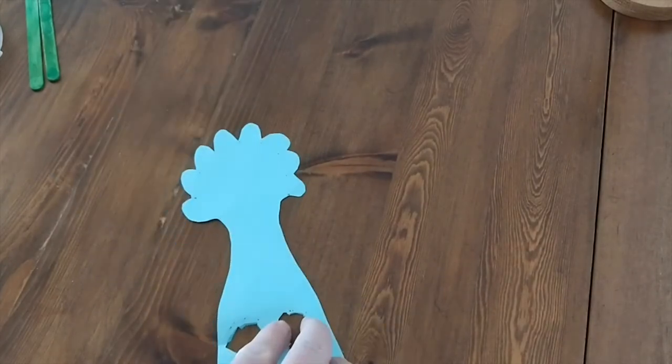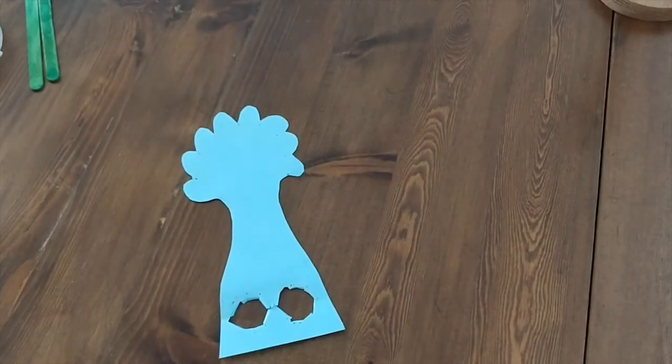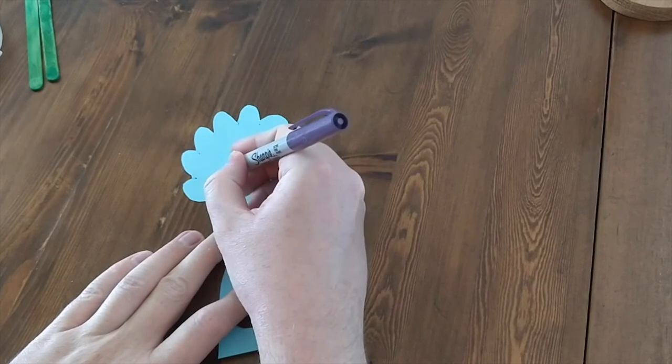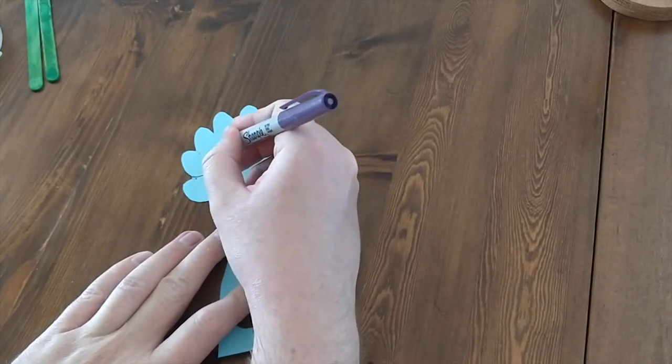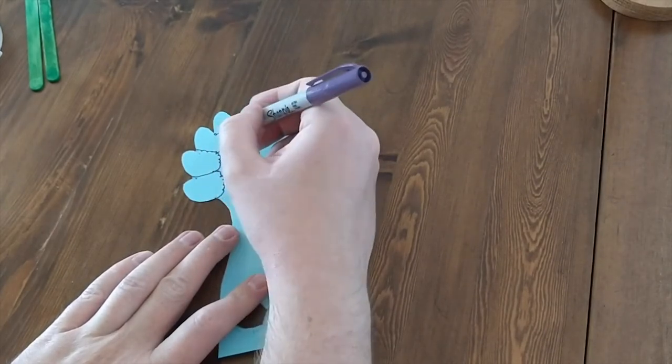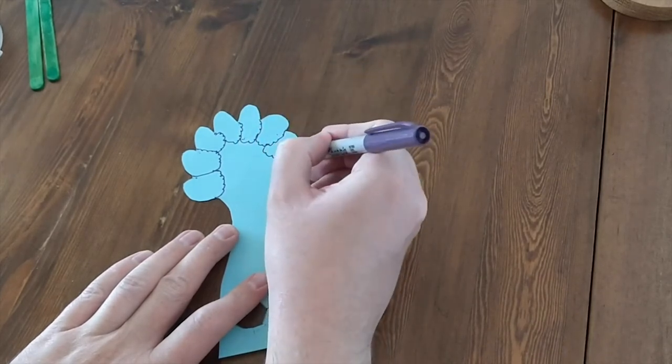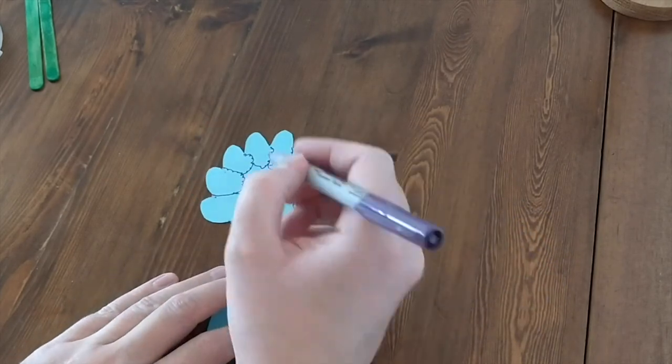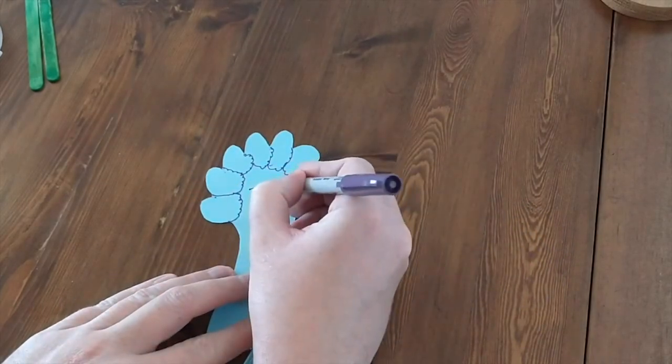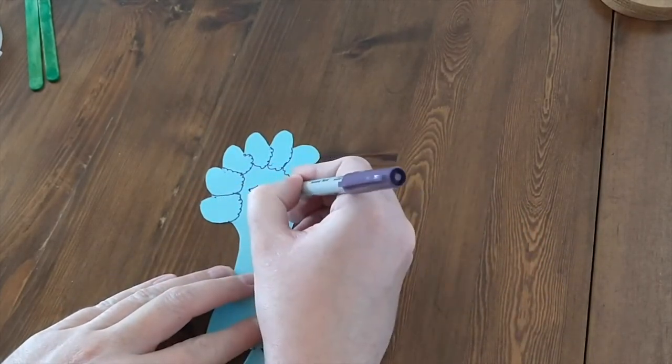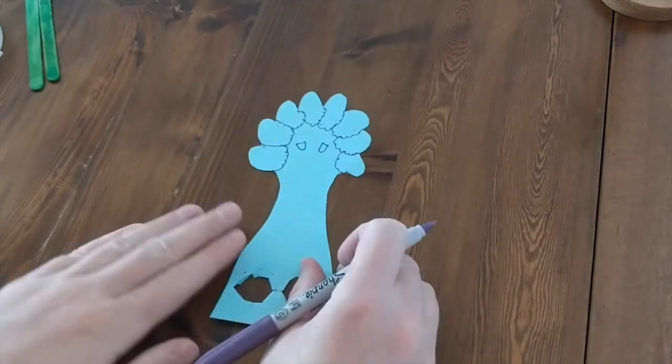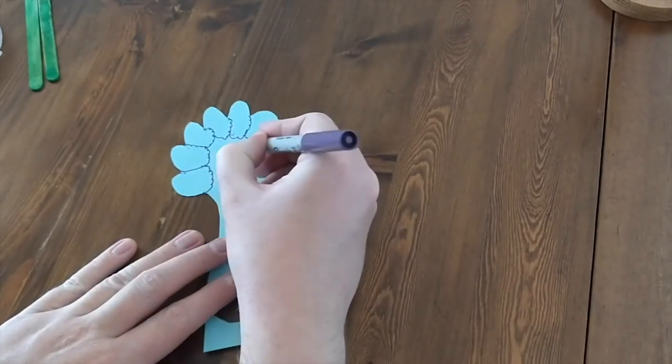So all you need to do now is add some designs to your puppet. I've flipped mine over to the clean side and I'm just using a sharpie marker or a felt tip to draw in some details. Now you could use anything you could get some wiggly eyes, you could get some pipe cleaners, anything you like at all really to make it as colorful and characterful as you like.